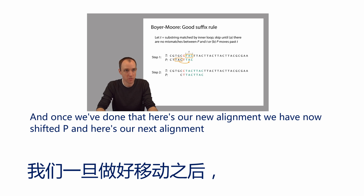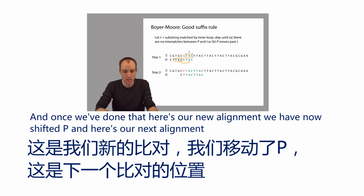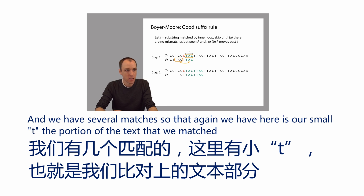Once we've done that, here's our new alignment. We've now shifted P, and we have several matches. Here's our small t — the portion of the text T that we matched.